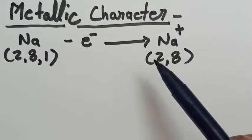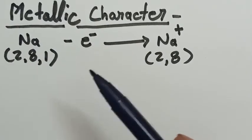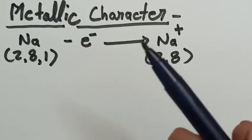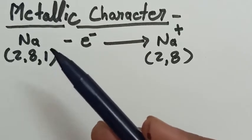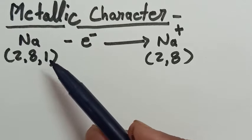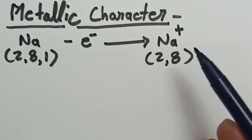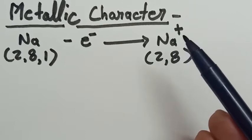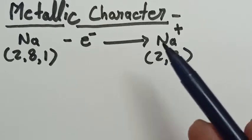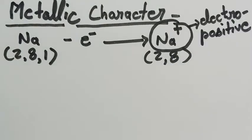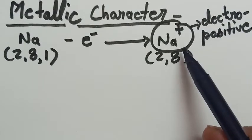Hello students, in this video I am going to start the next topic that is metallic characteristics. What are the metals? As we know, metals have a tendency to lose their valence electron and form positive ions, and hence are called electropositive elements.